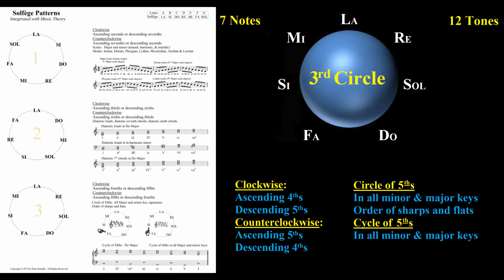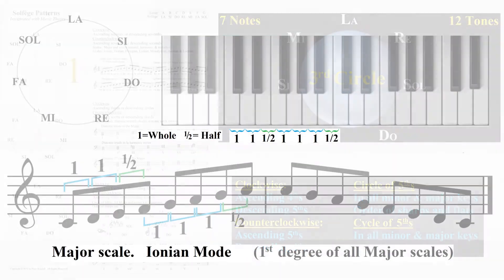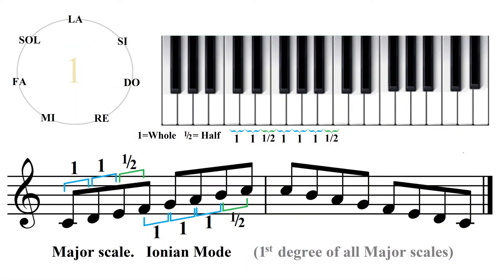Let's begin with the first circle, which contains all minor and major scales and the modern modes. Each is constructed from five whole steps and two half steps, all in a unique pattern. Do major is the basis of all that follows. Make sure you sing all the syllables. If you are unsure of the solfege, sing from the first circle on the top left side.